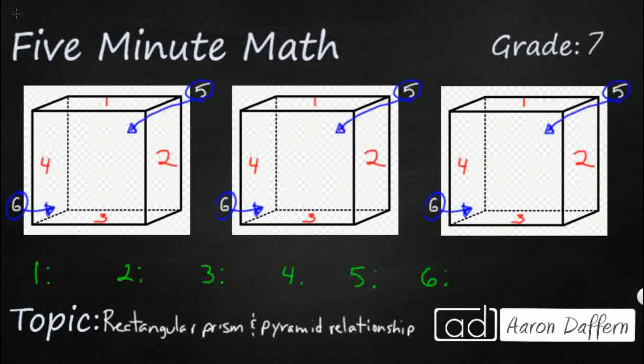Hello and welcome to 5-Minute Math. Today we are looking at the 7th grade concept of rectangular prisms and rectangular pyramids and the relationship between their formulas for volume, and we will do it in 5 minutes or less.